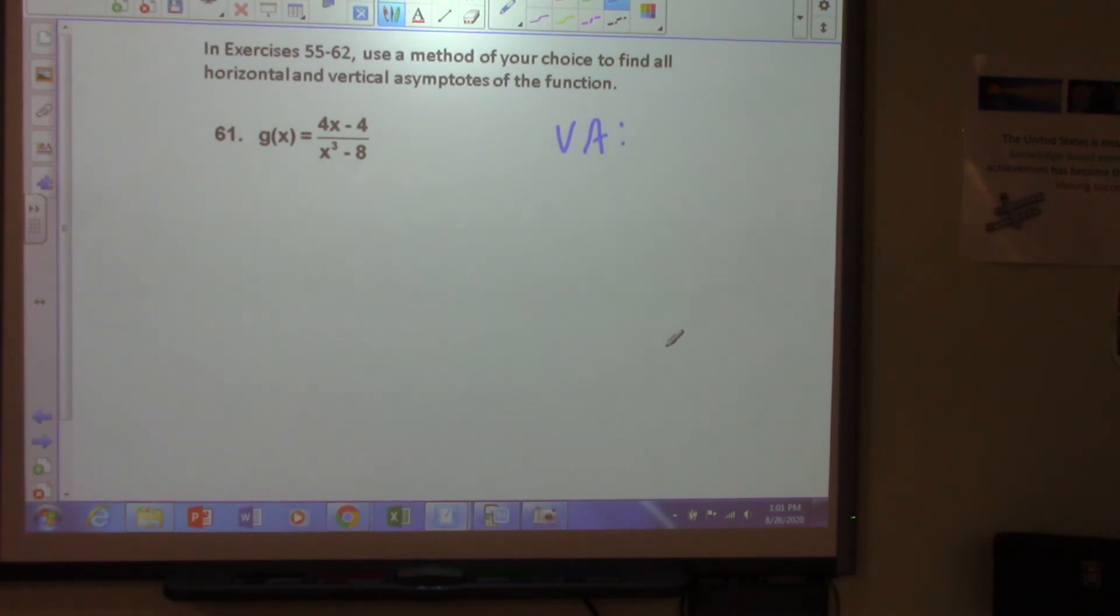Okay, next, 61. Vertical asymptote, x equals 3. What did you get, Kat? 2. 2? I got 2. What 2? X equals 2. Should get x equals 2.